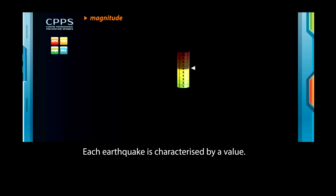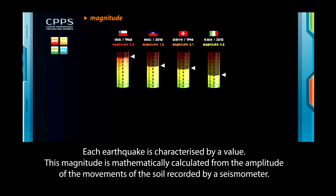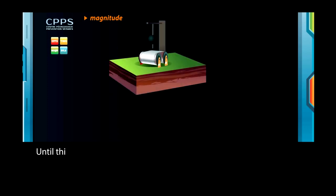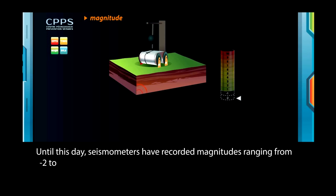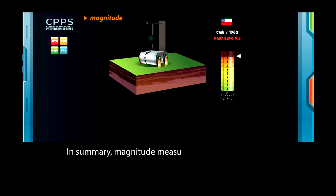The magnitude was introduced in 1935 by Charles Richter to measure the energy released during an earthquake so we can compare the earthquakes between them on the Richter scale. Each earthquake is characterised by a value. This magnitude is mathematically calculated from the amplitude of the movements of the soil recorded by a seismometer. Until this day, seismometers have recorded magnitudes ranging from minus 2 to 9.5, which corresponds to the largest earthquake registered to date in Chile in 1960. In summary, magnitude measures the energy released as a seismic wave by the earthquake.